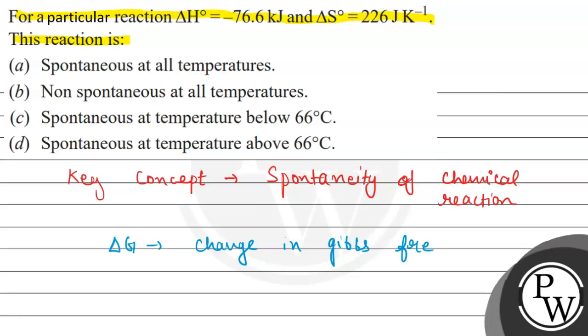For this, we should know Gibbs free energy. Gibbs free energy is that maximum energy which we can convert into useful work. And ΔG is the change in Gibbs free energy. For spontaneity, ΔG value should always be less than zero, or we can say it should always be negative.